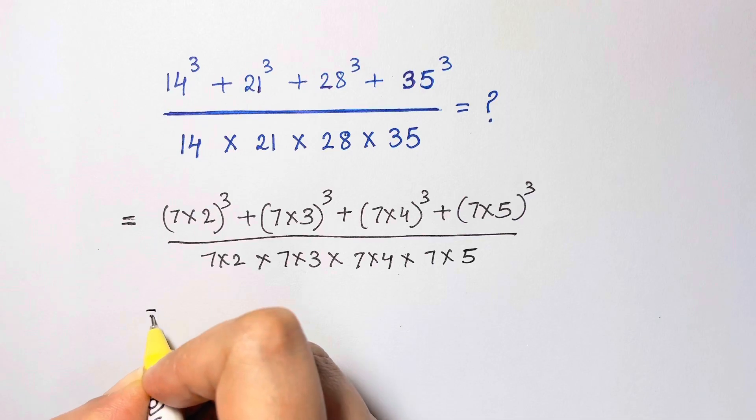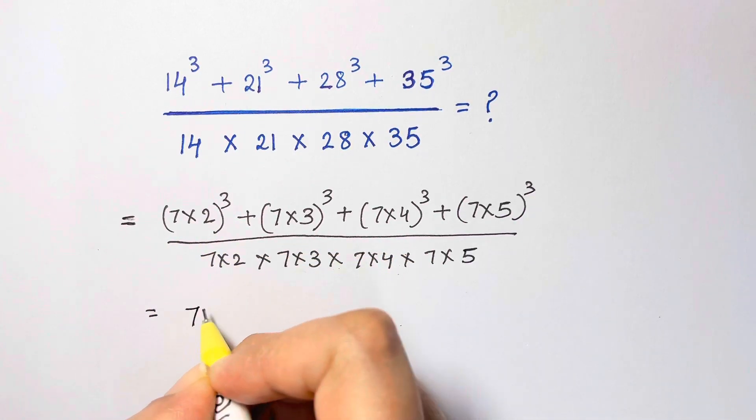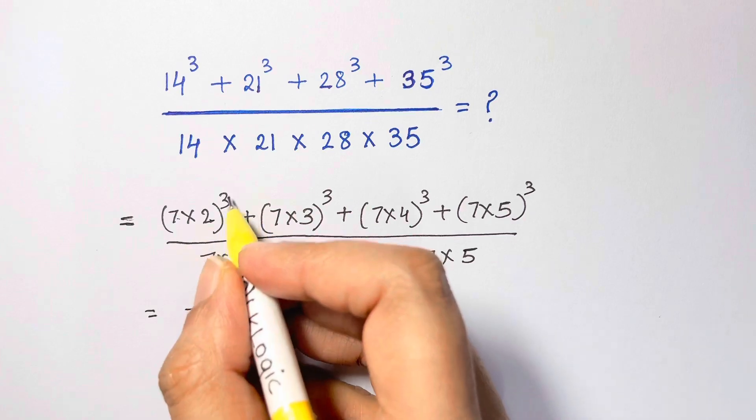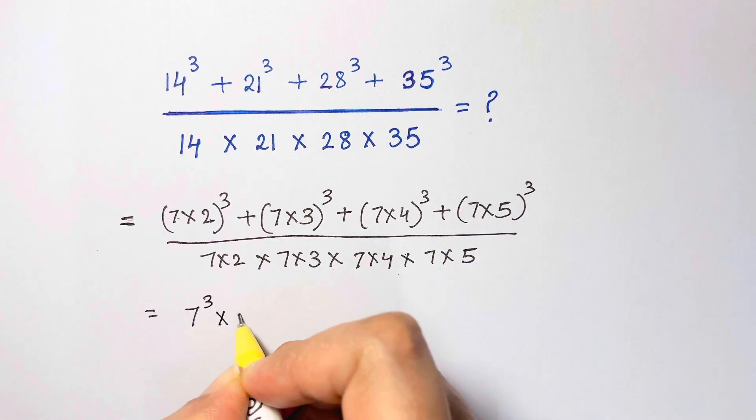And now what do we have? When we have this, we can just multiply the product to the power. 7 cube times 2 cube.